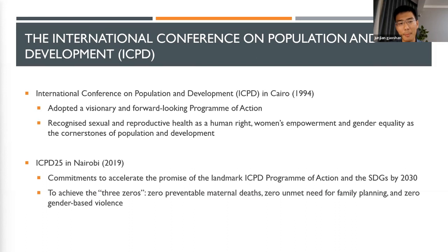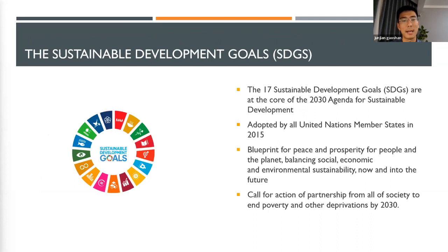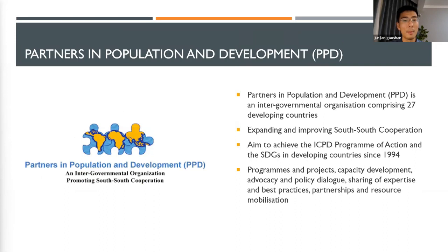In 2019, the Nairobi Summit happened. It was convened by the government of Kenya and the government of Denmark. It renewed the commitment on the unfinished business and raised the three zeros concept: zero preventable maternal deaths, zero unmet needs for family planning, and zero gender-based violence. And it's going to be contributing to the SDGs, which has 17 sustainable development goals, adopted in 2015 with a deadline of 2030.